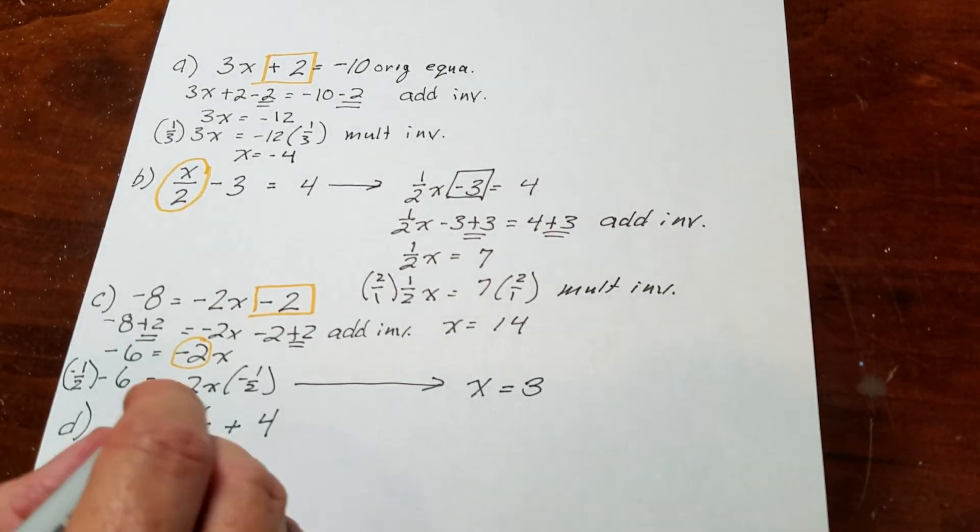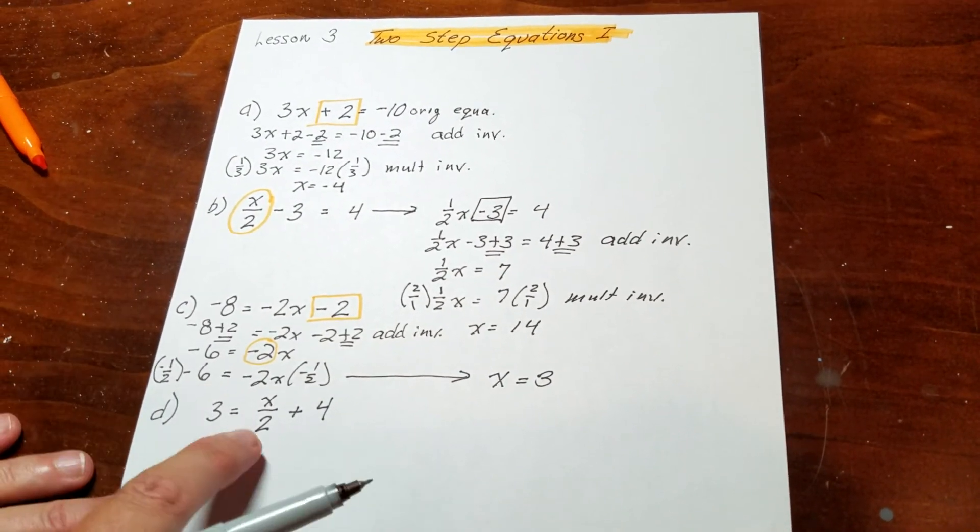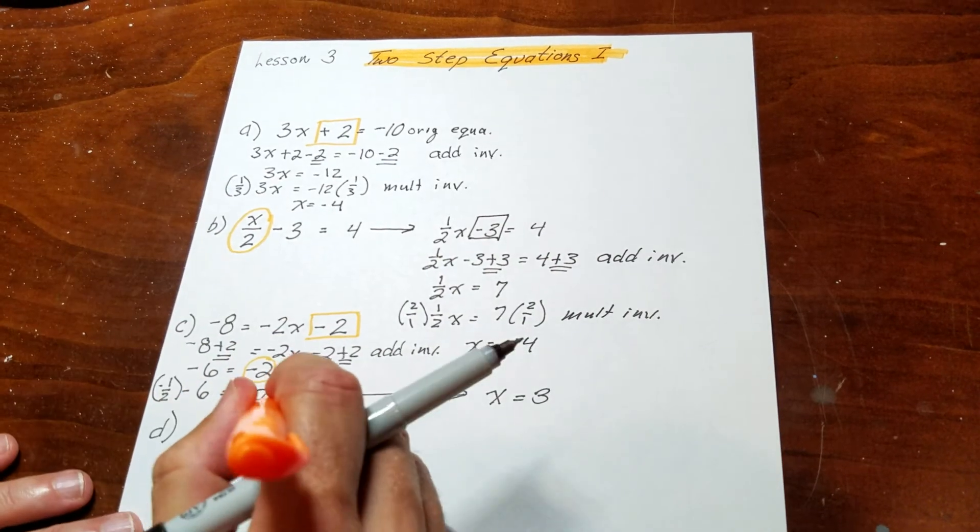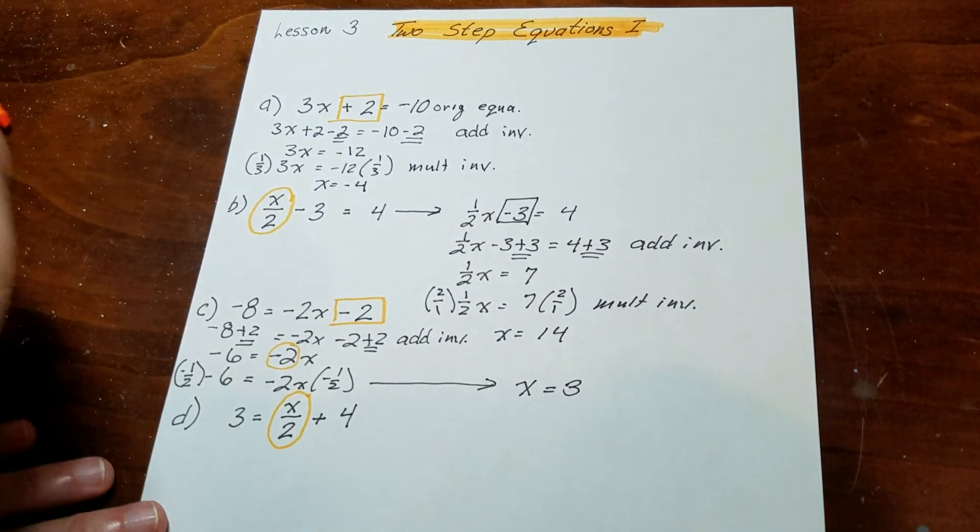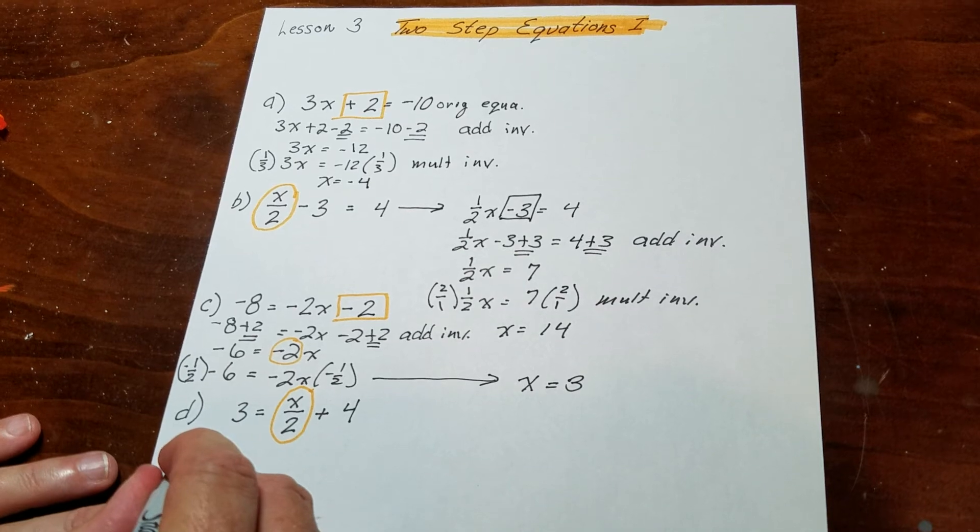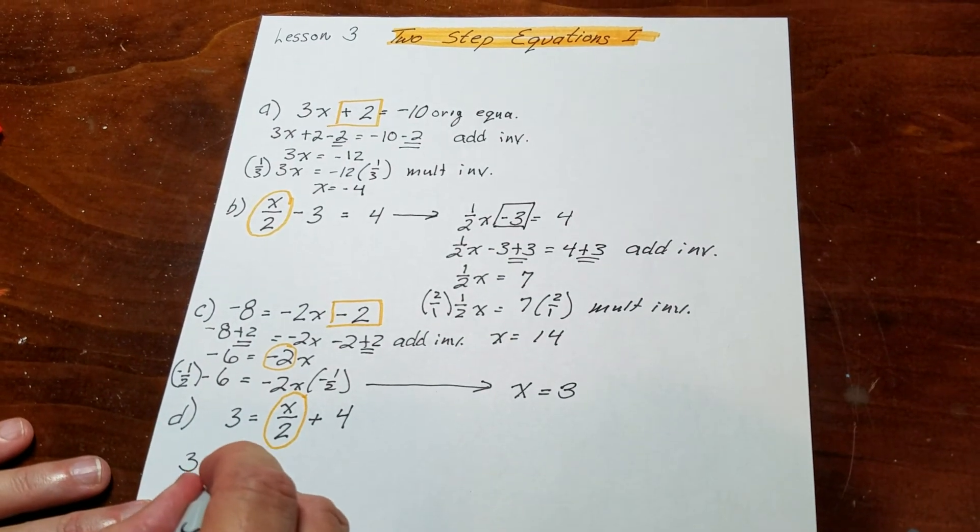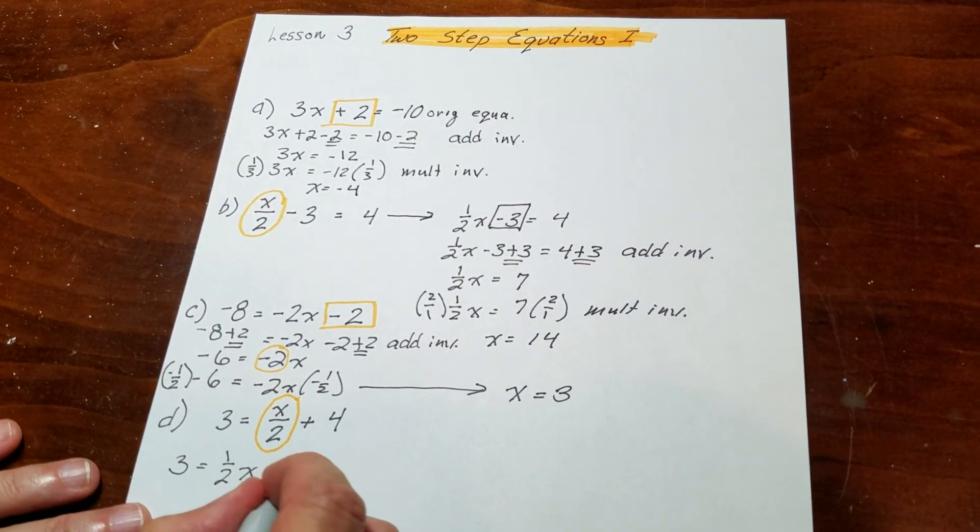This guy right here, same thing as I did on the second example. I've got this weird looking thing right here and you really don't want to do equations with that in there, it causes problems. So I'm just going to rewrite that, so this is actually 1 half x plus 4.